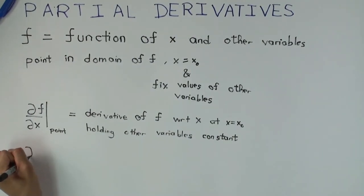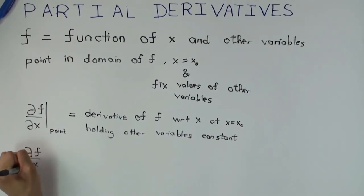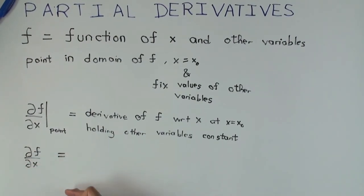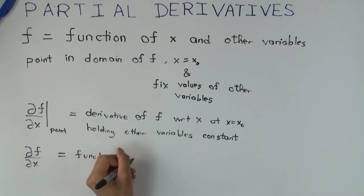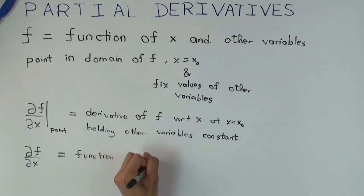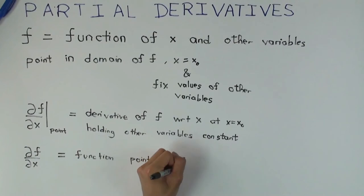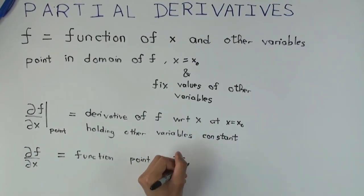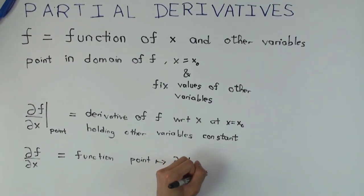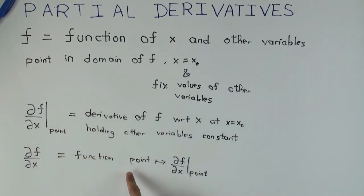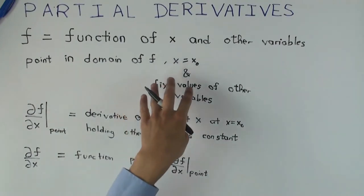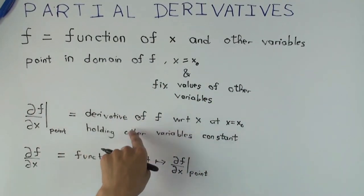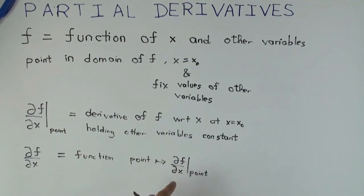Now, if I ask you what's the general definition of the partial derivative — so df/dx — this is just the function which sends each point to df/dx at the point. So this is a function which at every point sends it to the value of the derivative at that point. So df/dx is a function of all the variables, not just x, but even the other variables which are held constant while calculating the derivative, and the function sends each point to the derivative.